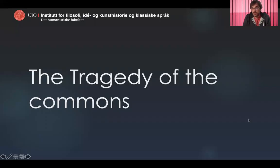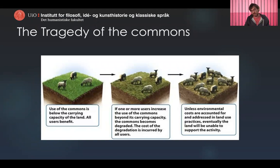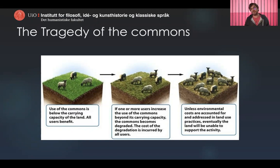In the next part of the lecture we're looking at the tragedy of the commons. The commons, as you know from the Hardin article you read, were a piece of land in villages in England that could be used by everyone in the village to graze their sheep or cows — you could just bring them there and eat as much of the grass as was there.